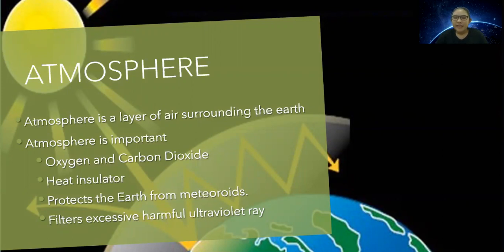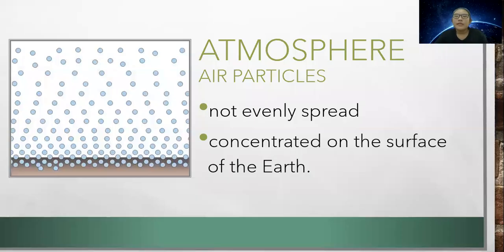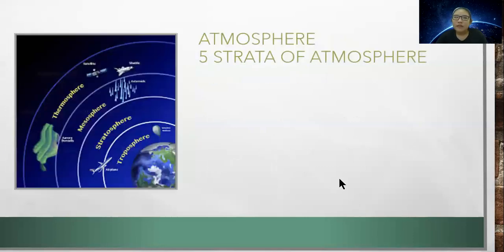Ultraviolet rays can cause skin cancer or rashes on the skin. Air particles are not evenly spread and are concentrated on the surface of the earth. Atmosphere is divided into five strata.